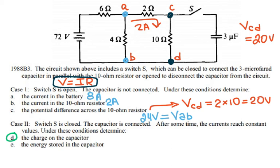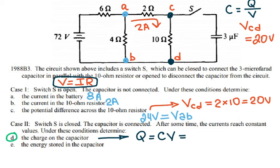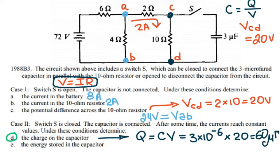Since the capacitance is 3 microfarads, I use the formula C = Q/V, so Q = C × V. The charge is 3 × 10⁻⁶ farads times 20 volts, giving 60 × 10⁻⁶ coulombs, or 60 microcoulombs. That is the charge stored on the capacitor.